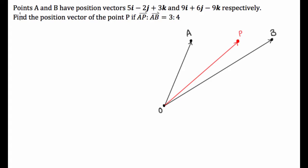What we have to do is we have to find the position vector of the point P if AP as a ratio of AB is equal to 3 is to 4. So basically, what we have been told is the vector AP is 3 quarters of the vector of AB.